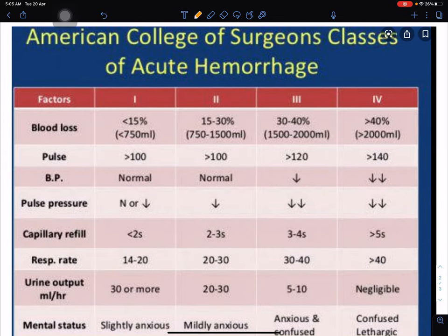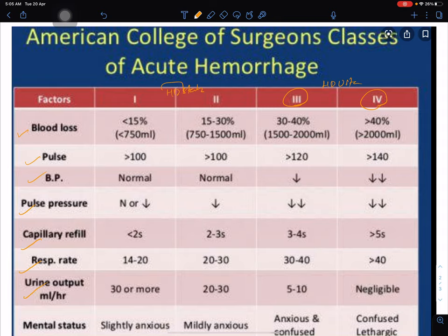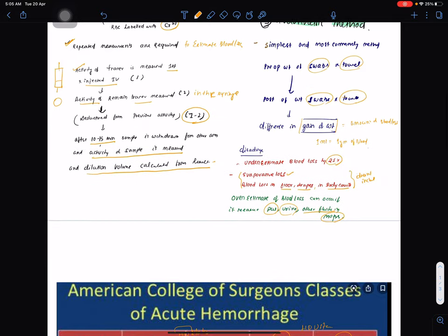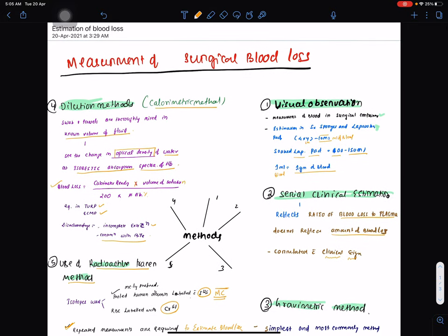American College of Surgeons classifies acute hemorrhage into four stages. You should remember what are the four stages. These stages are hemodynamically unstable, hemodynamically stable phases. You can read the factors like blood loss, pulse, BP, pulse pressure, capillary refill time, respiratory rate, urinary output, and mental status. You have to remember this. This much you have to write when measurement of surgical blood loss is asked in exam.